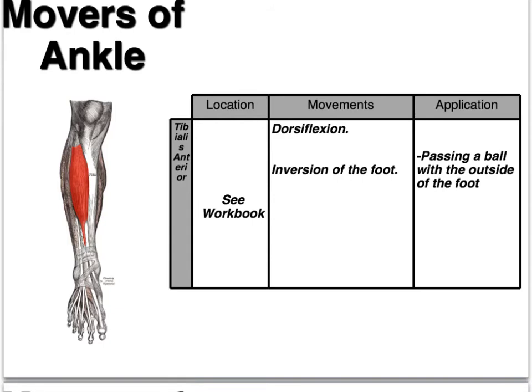This is an anterior aspect of the lower leg where we see the tibialis anterior, and that is responsible for dorsiflexion of the foot and inversion of the foot. Dorsiflexion is where you bring your toes up towards you. You can remember the tibialis anterior because it is on the same side as the tibia bone and anterior is on the front side of our lower leg.